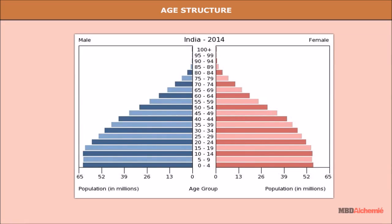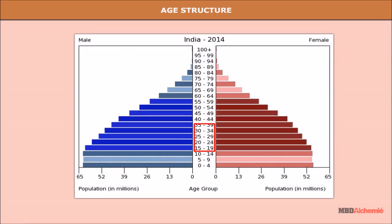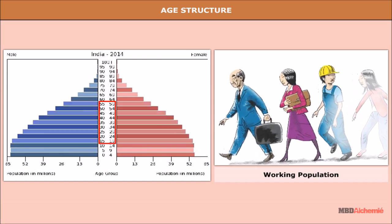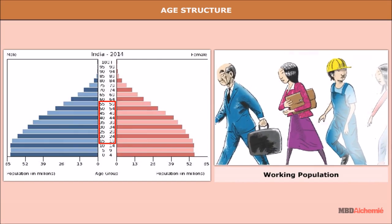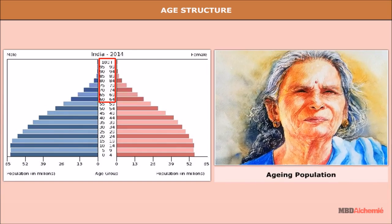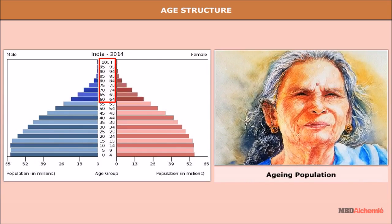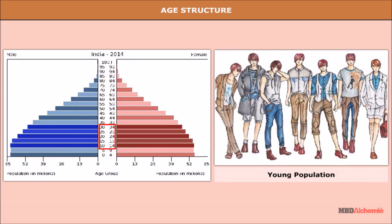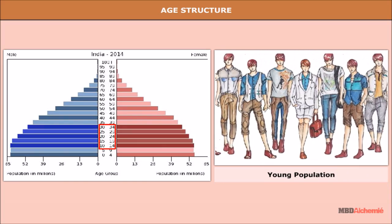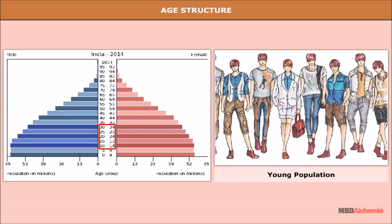Age structure means the number of people of different age groups. Population in the age group of 15 to 59 indicates working population. Population above 60 years represents an aging population. Young population would mean the region has a high birth rate and the population is youthful.